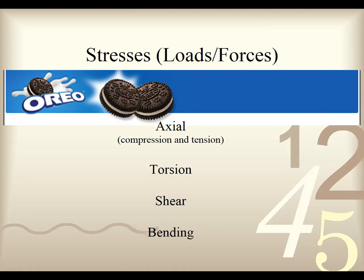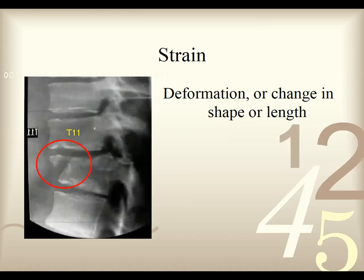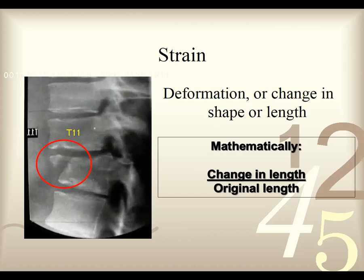Torsion is like a twisting motion — like twisting a bottle cap off. Shear force is like cutting through something, like those sharp swords cutting through a stick either straight across or at an angle. Bending is like when you break a stick — you take a stick and bend it until it breaks. Depending on the type of strain, you can see deformation or a change in shape or length of a bone based on where the strain occurs. Mathematically you see this as change in length divided by original length.